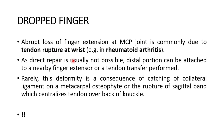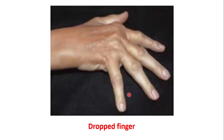As direct repair is usually not possible, the distal portion can be attached to a nearby finger extensor, or a tendon transfer performed. Rarely, the deformity is a consequence of catching of the collateral ligament on a metacarpal osteophyte, or the rupture of the sagittal band, which centralizes the tendon over the back of the knuckle.